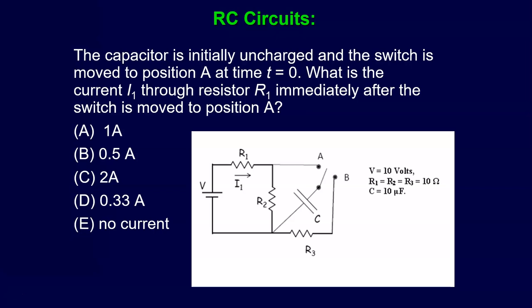The capacitor is initially uncharged, and the switch is moved to position A at time T equals 0. What is the current I through resistor R1 immediately after the switch is moved to position A? So I'll give you a second if you want to pause and think about it. All right, so what would happen here is the answer is 1 amp.